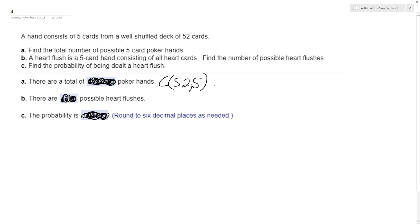So that ends up being equal to 52 factorial over 47 factorial times 5 factorial. And what this ends up being equal to is a really large number. There's a possibility of two thousand five hundred ninety-eight thousand nine hundred sixty hands. That's a lot.